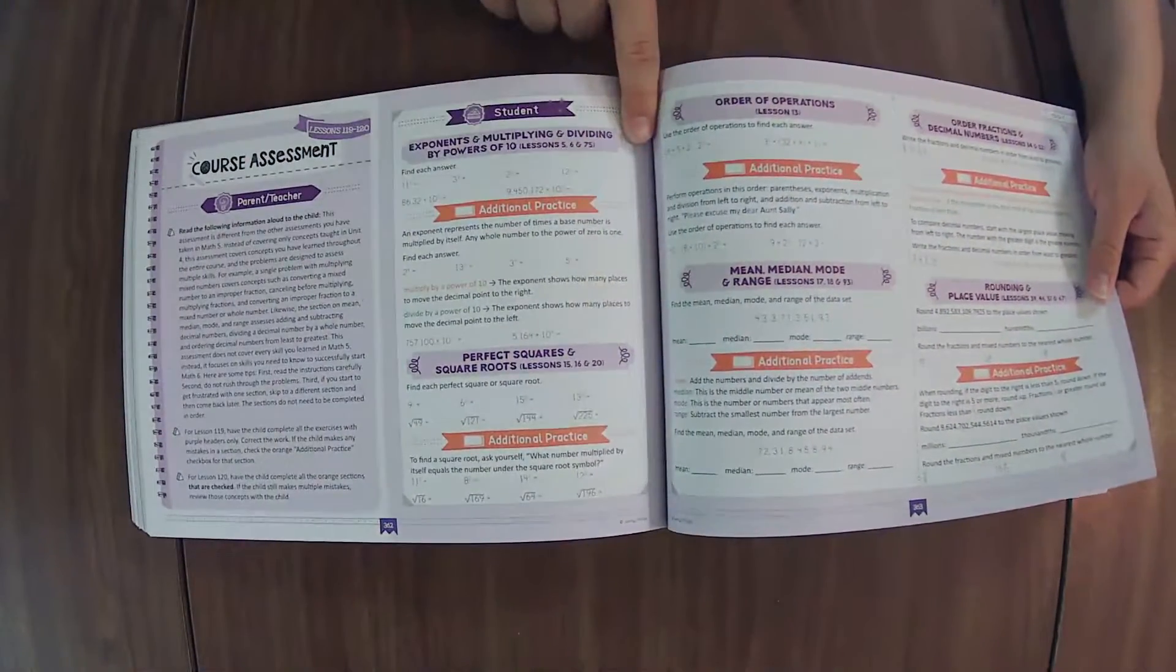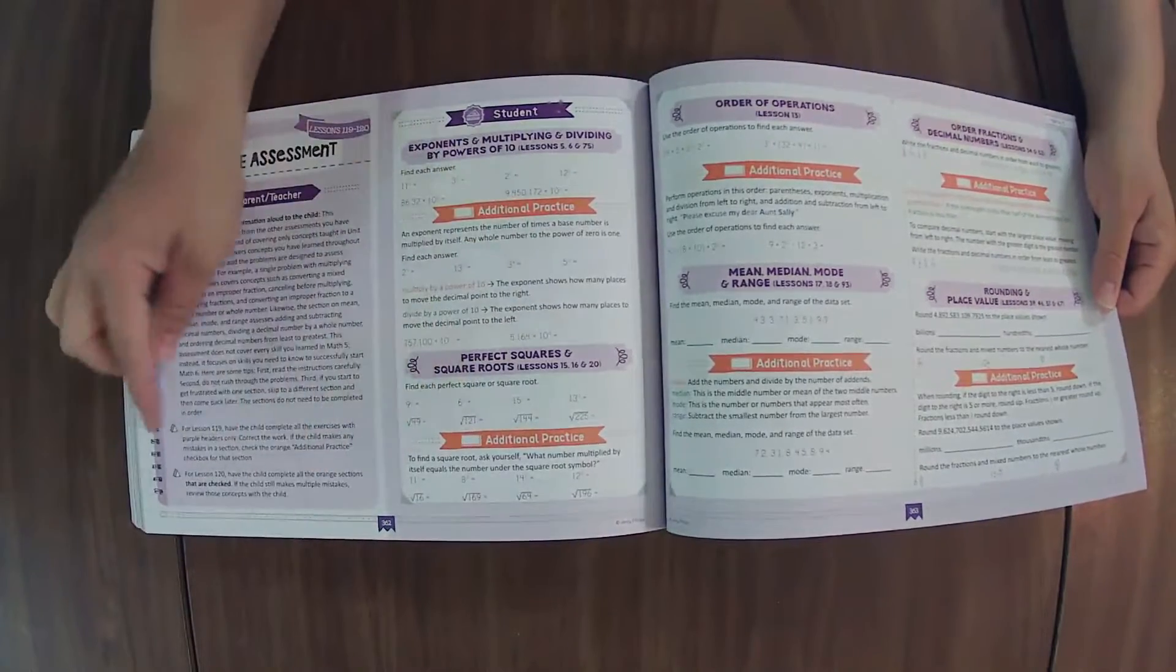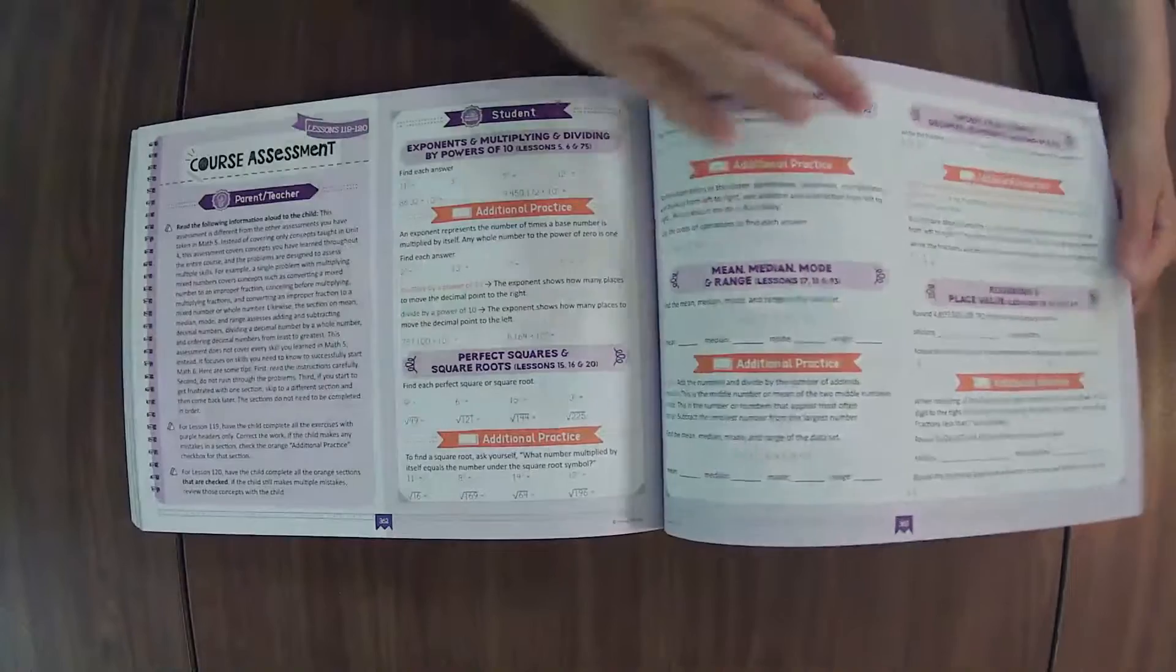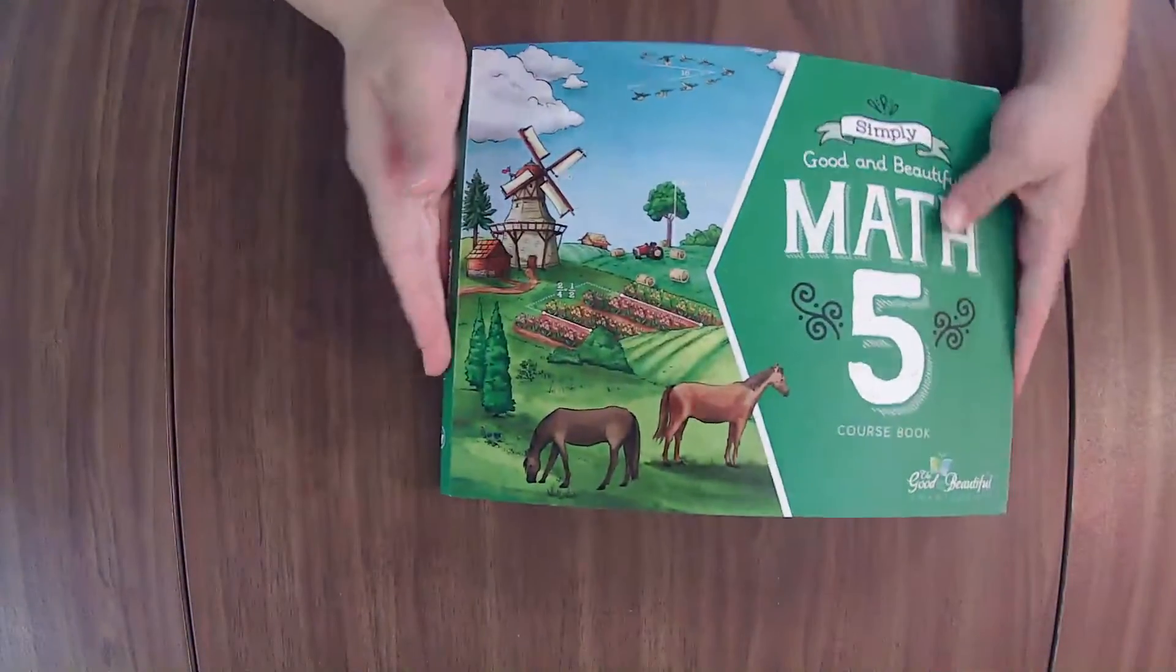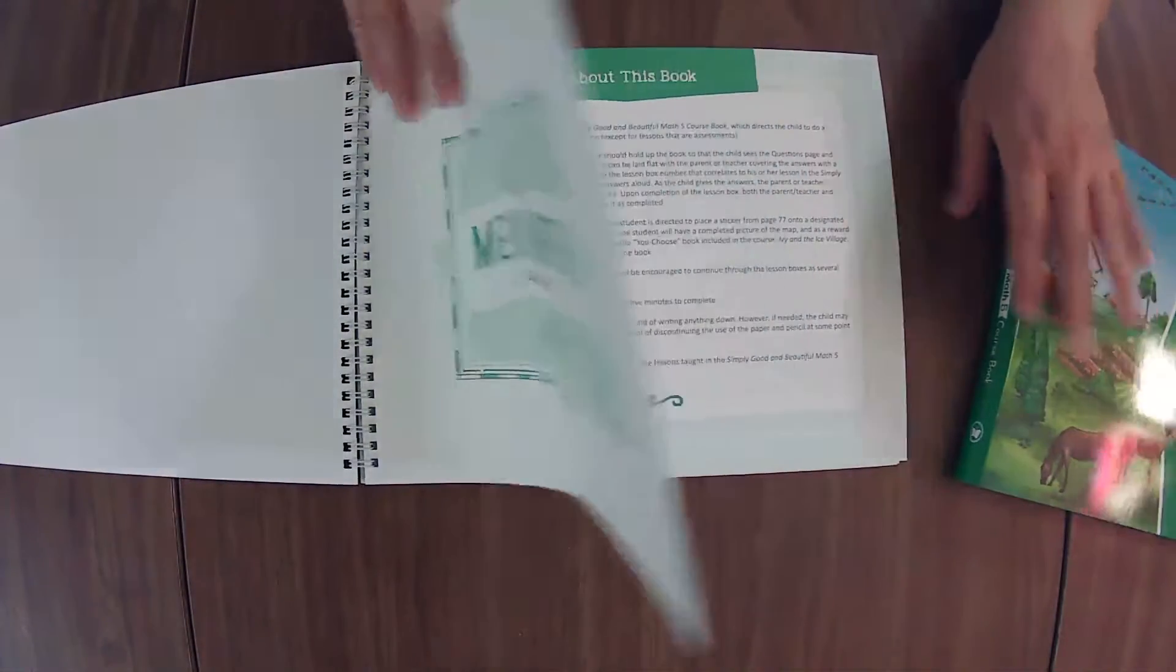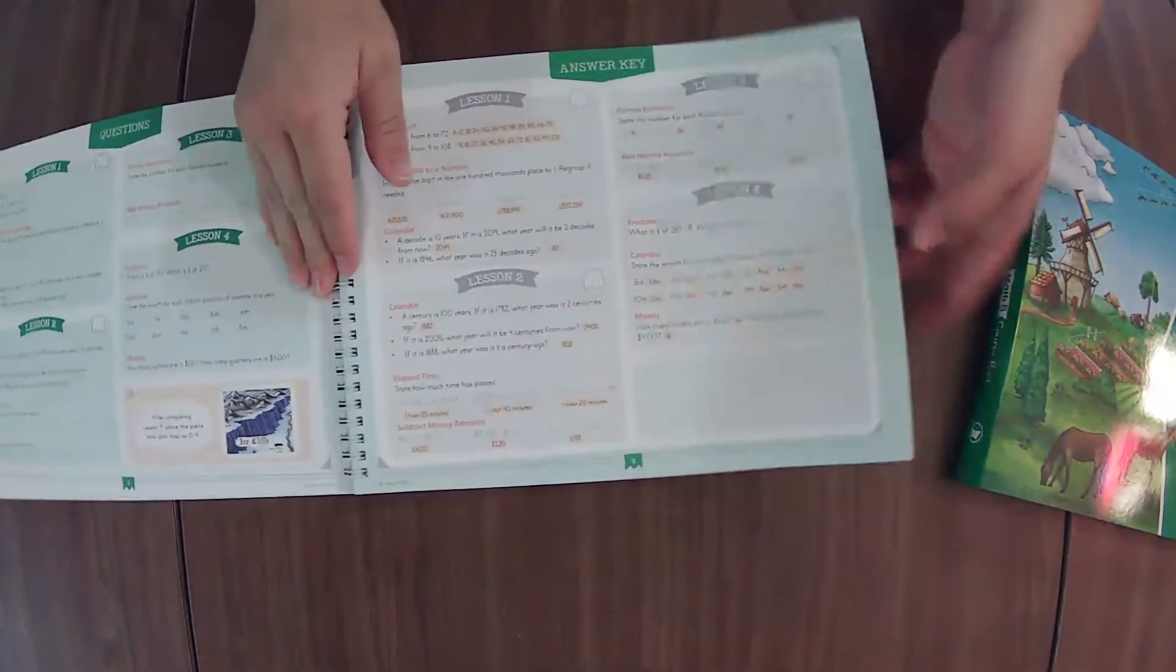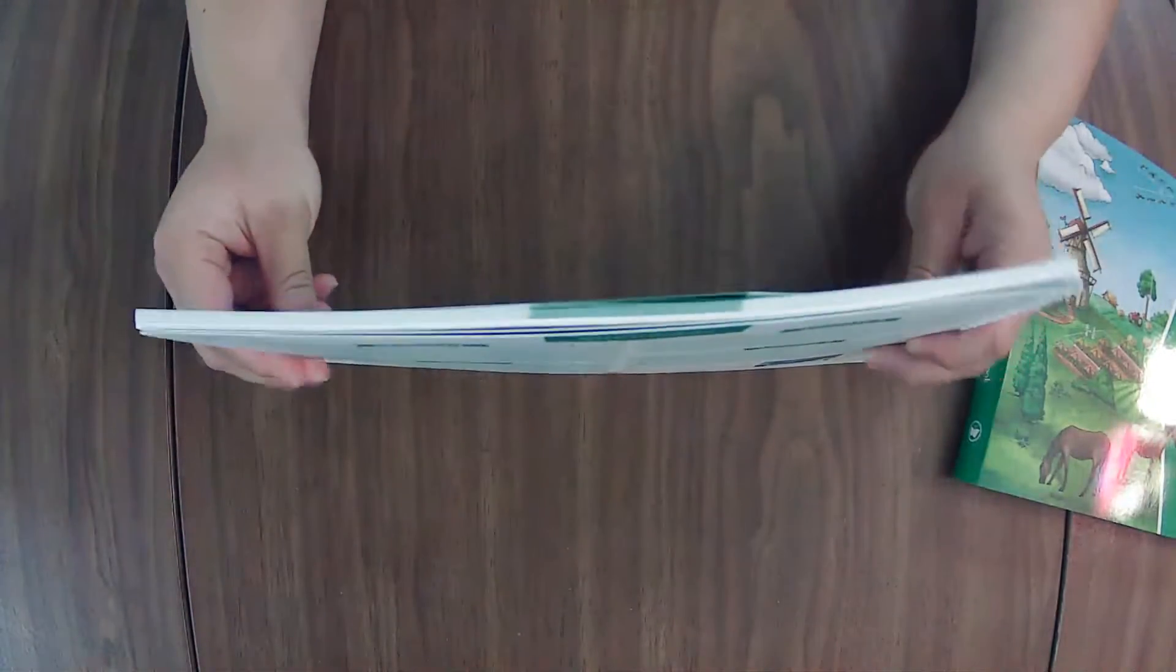Here's the course assessment. Same as the unit assessments, they'll do the purple and then you'll go from there and this will give you instructions on how to grade it and when to check these. And then if your child is ready to move on to the next level or needs to practice a few things. Here we have a reference guide and some punch out pieces, just one page to punch out pieces. All right so there's the course book. Let's check out mental math map mystery. Each lesson will refer them to come here and do the lesson portion of the mental math.